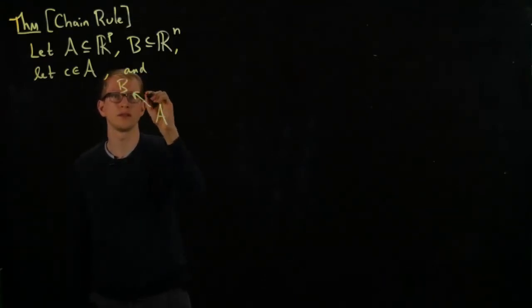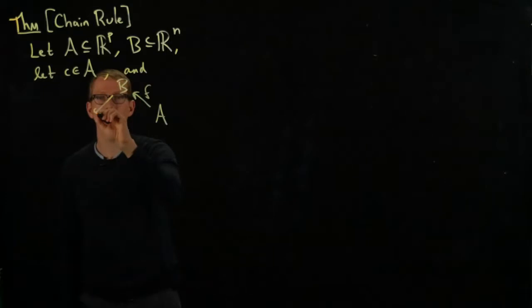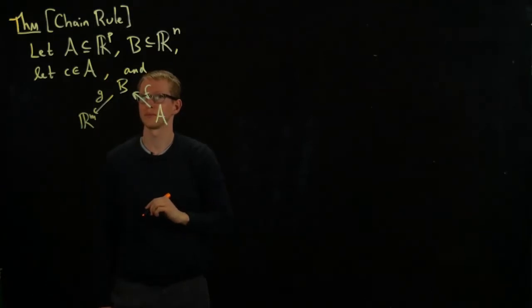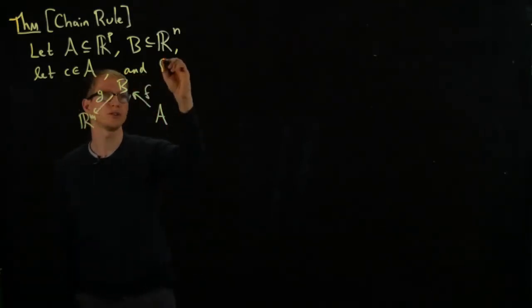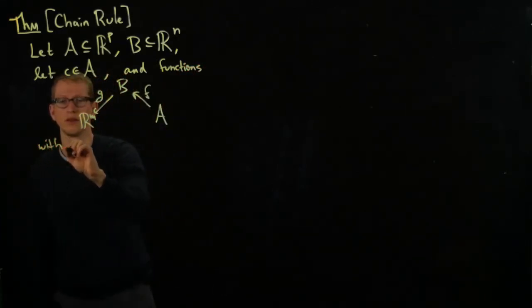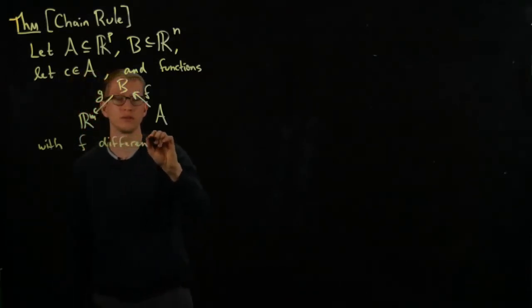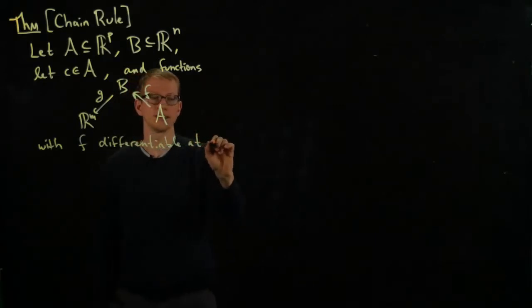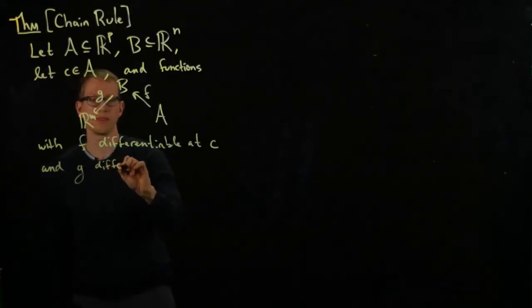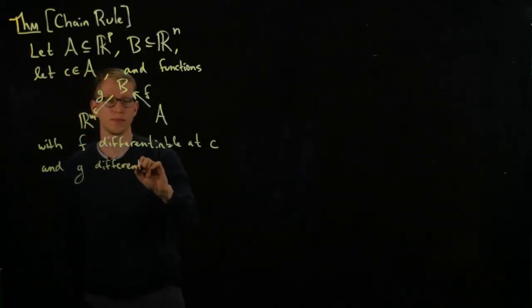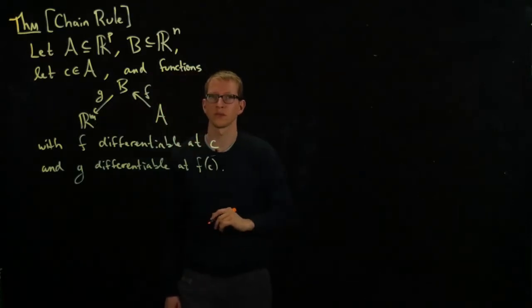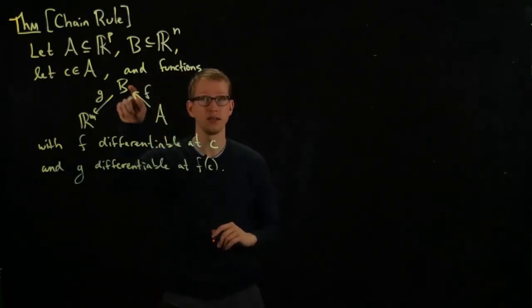A function F from A to B, a function G from B to R^M, with F differentiable at C and G differentiable at F of C. So C is an element here, F of C is an element here.